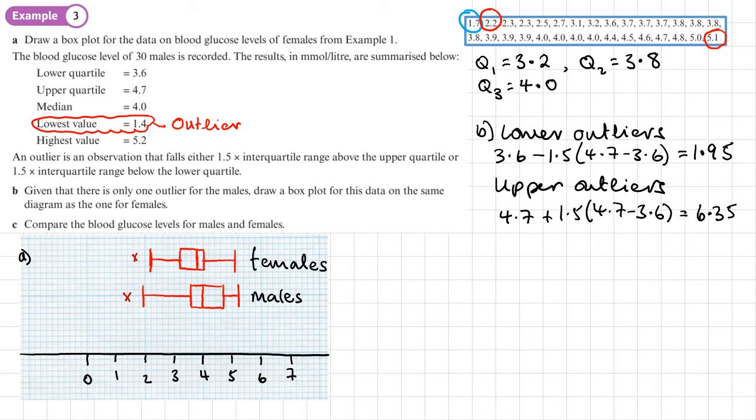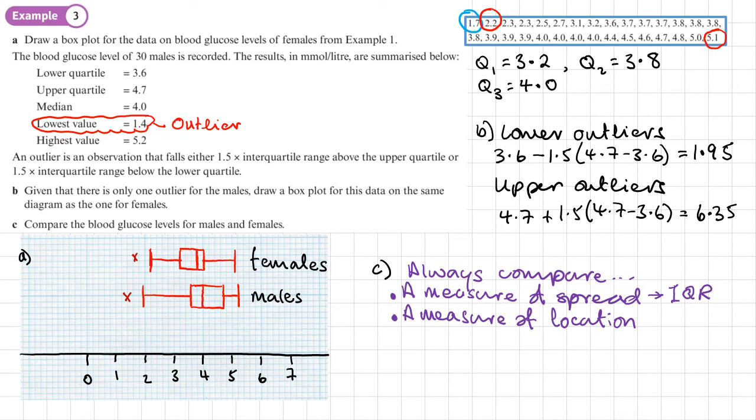Part C asks us to compare the blood glucose levels for the males and females. When you do any comparison, you must always compare these two things: a measure of spread, in this case the interquartile range, and a measure of location, in this case we're going to be using the median.